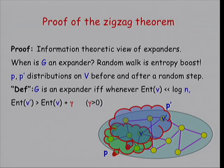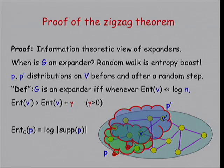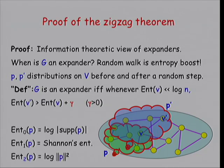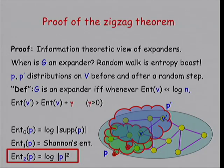Entropy here — I didn't define it precisely. You could take whatever you like. Basic expansion uses zero-entropy, which is the log of the support of the distribution — that's our combinatorial definition. You can take Shannon entropy, or L2 entropy which is Renyi entropy — that's what you need in the linear algebra proof. But just think of it intuitively as entropy.